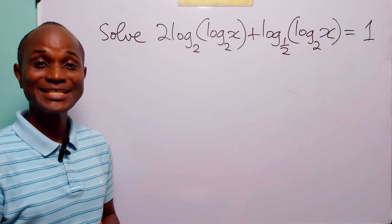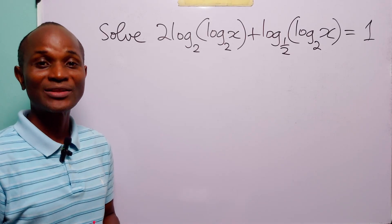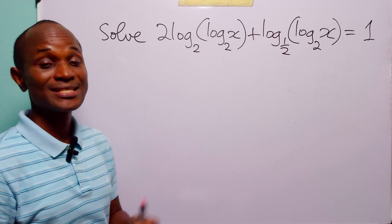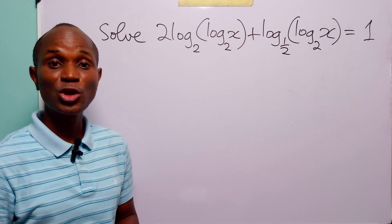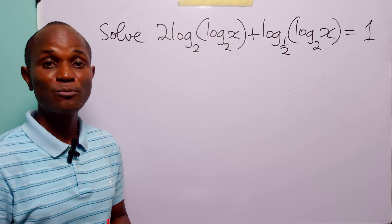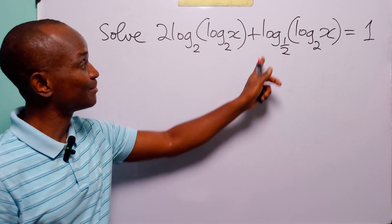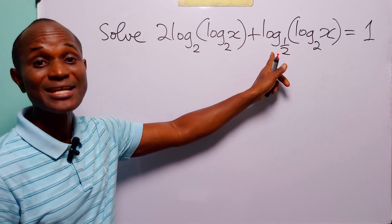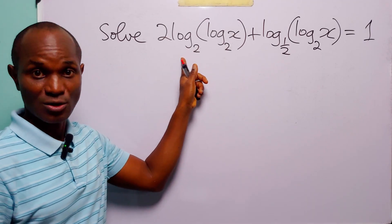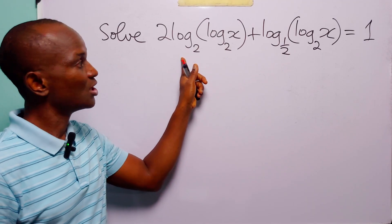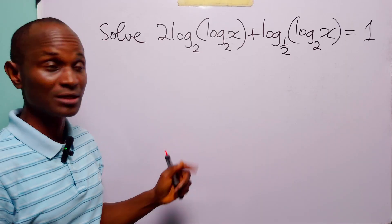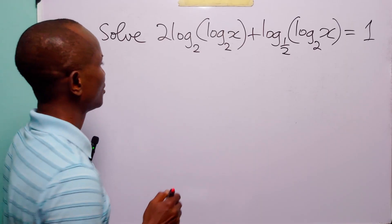Hello and welcome. In this math tutorial, our task is to find the value of x that satisfies the given logarithmic equation. To solve this problem, we are going to start by changing the base of this logarithm to match the base of this other logarithm. So when we apply the change of base formula to the given equation, we have: